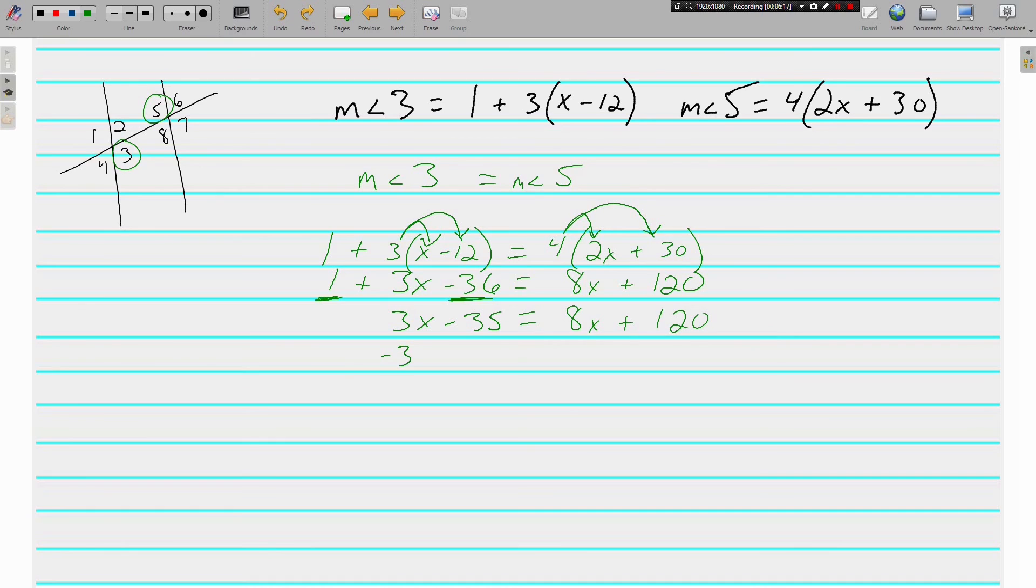I'm going to subtract 3x from both sides. Get my x's together first. On the left, I now have negative 35. And on the right, I have 5x plus 120. Subtract 120 from both sides. And now I have negative 155 is equal to 5x. And divide both sides by 5. I end up with a solution of x is equal to negative 31.